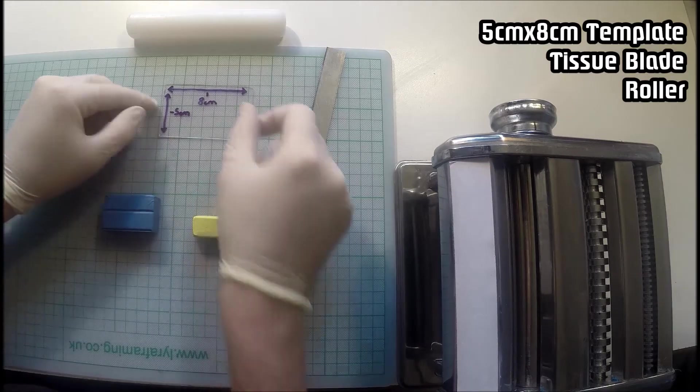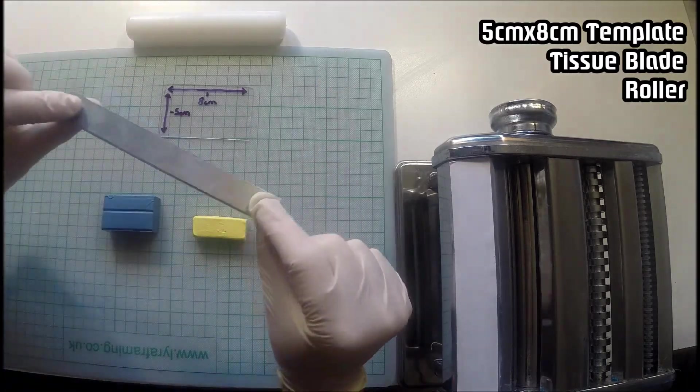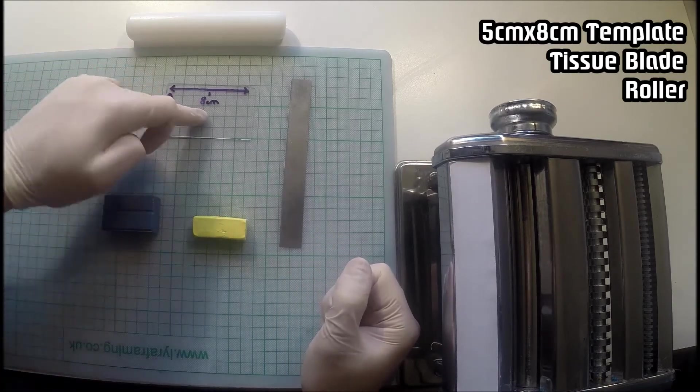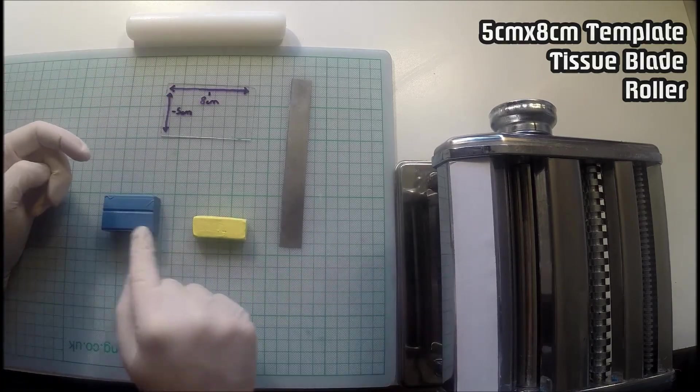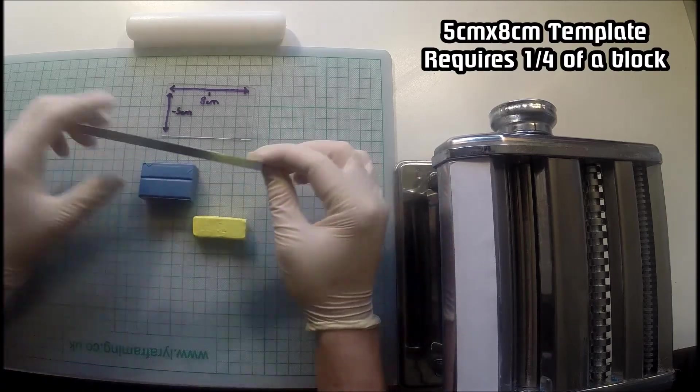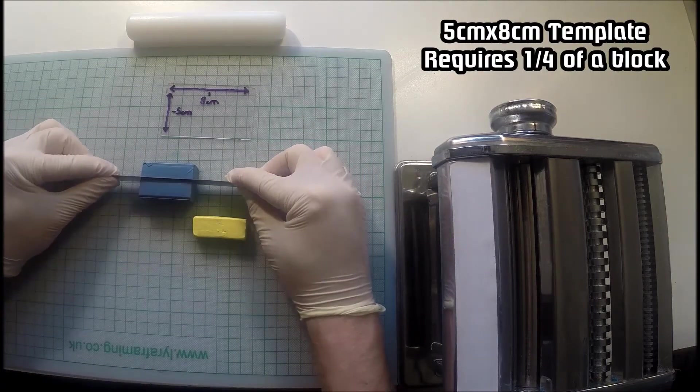I use a 5cm x 8cm bit of perspex, a roller and a tissue blade with a very sharp edge. Be very careful of that sharp edge. So for a 5cm x 8cm template you're going to need approximately one quarter of a block of Sculpey to easily create that template.